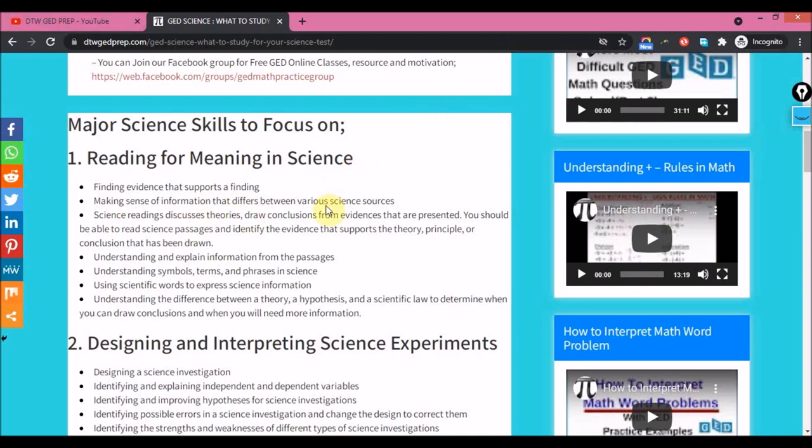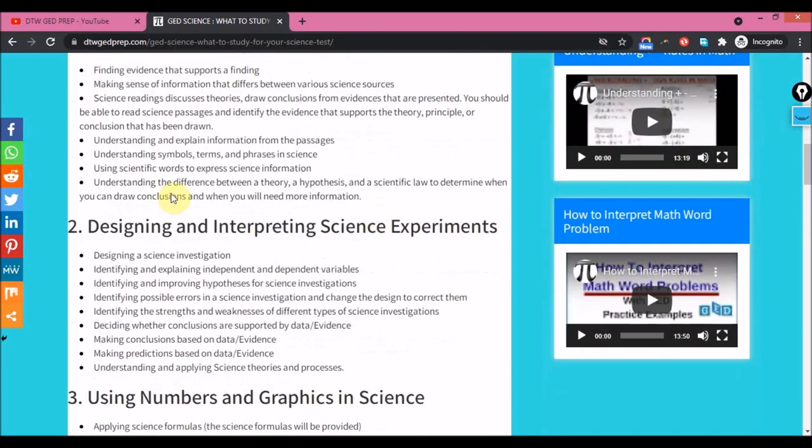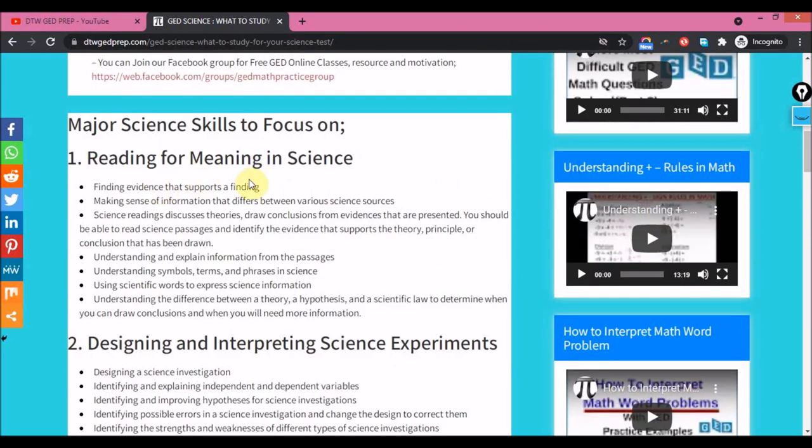It's still reading for meaning - you should be able to comprehend a text. You'll be given a text and you should be able to comprehend it. And you should also know the difference between a theory, hypothesis, and a scientific law. That's where reading summaries of some key terms in your science matters.